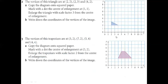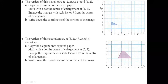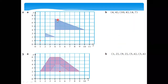Question 2: The question shows us the coordinates of a shape and gives us the center of enlargement. From the center of enlargement, it covers one box to the shape. The scale factor is three, so one multiplied by three gives three boxes. The next point starts from there, and you draw the same shape but three times bigger.